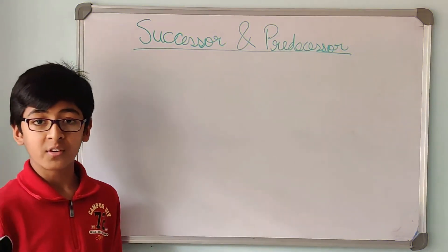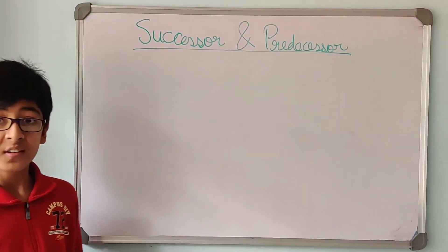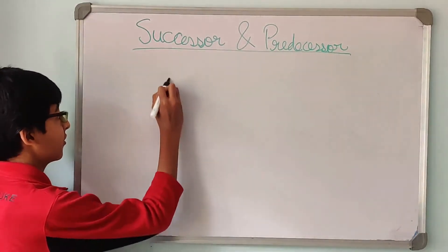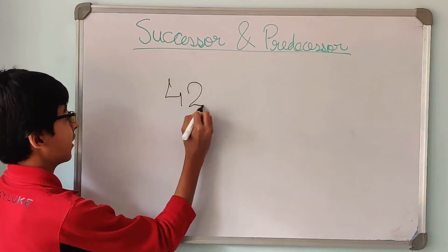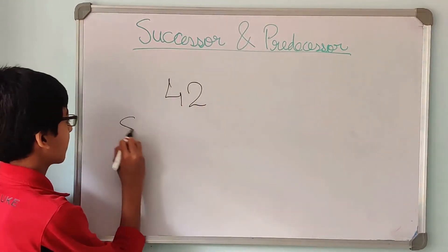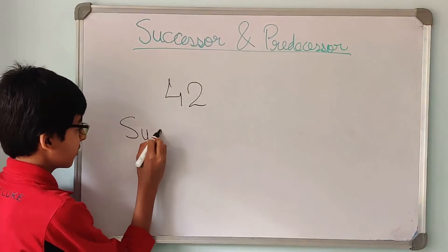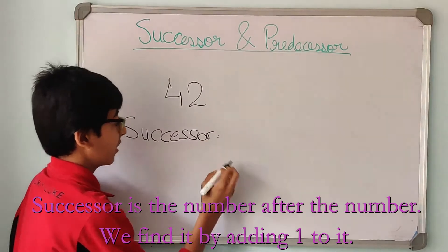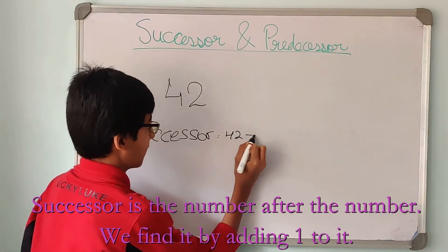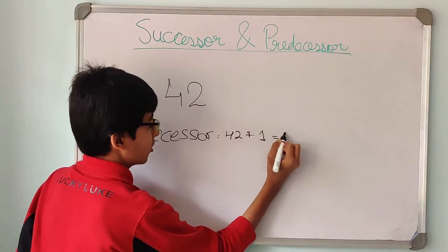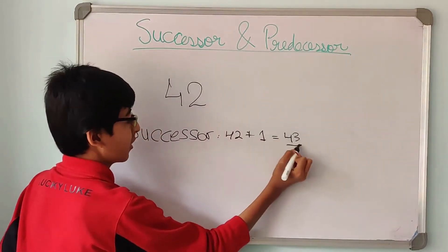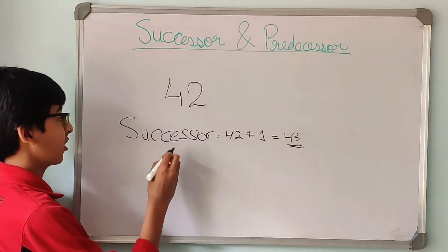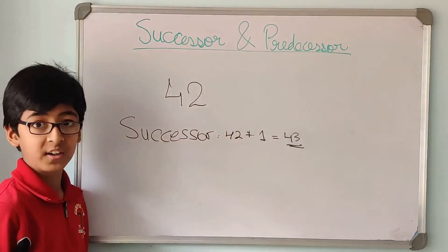So let's understand what is successor and predecessor. This is a very easy topic. Let's see what is successor. For example, we take the number 42. What does successor mean? Successor is nothing but the number after it, and we get that by adding 1 to it. So the number after 42 is 43, and once we add 1 we get 43. So the successor of 42 is 43. Easy right?